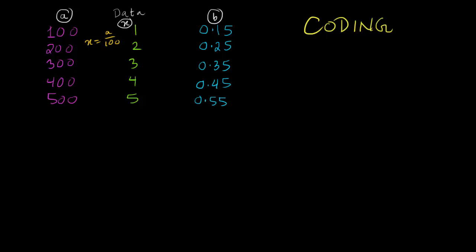We have made the same data into 1, 2, 3, 4, 5. On the other hand, here, what we can do, we can multiply the data with 10 and then subtract 0.5. For example, if you have B, if you multiply B with 10 and then subtract 0.5, we get x, which is 1, 2, 3, 4, 5. By doing this, the calculation becomes much easier.